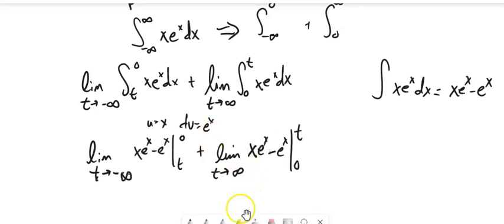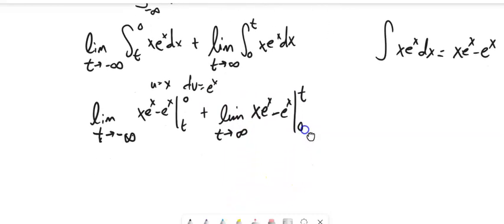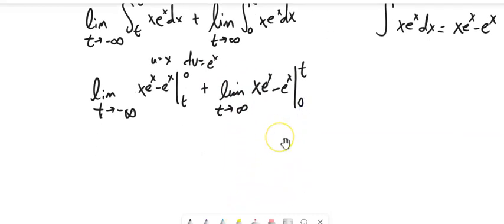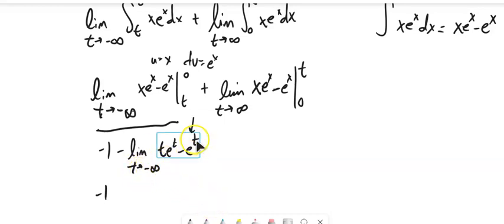It gives us these two pieces here, so we can start plugging in some values. Remember, if either one of these diverges, the whole thing diverges. So let's take a look at this part first. If I plug in my zeros here, I've got zero times one, so zero. So I've got negative one, minus, and then I've got this limit. So I know that this part, as t goes to negative infinity, this goes to zero.